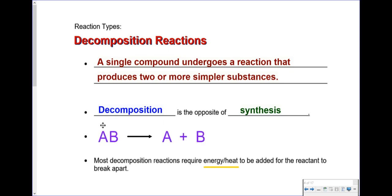Here we have our single reactant — a compound made up of elements A and B — and that breaks apart or decomposes into simpler parts, element A and element B. It's often the case that decomposition reactions require some kind of energy to be put into them in order to break the bonds between these two elements. Quite often that energy is in the form of heat, so we put a triangle above the arrow to indicate that energy was put in as heat.